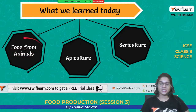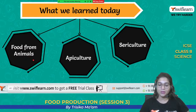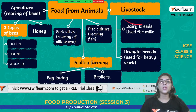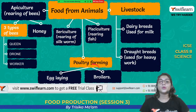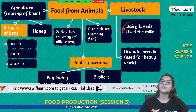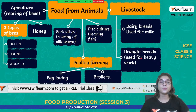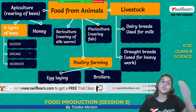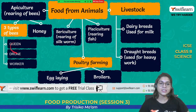Let's review what we studied today. We studied about animal husbandry — what food we get from animals and how we take care of them. We studied about sericulture for silk, pisciculture for fish, poultry farming for egg and meat, and livestock divided into dairy breed and drought breed. We also studied apiculture for honey and rearing of bees, and the three types of bees: queen, drone, and worker.